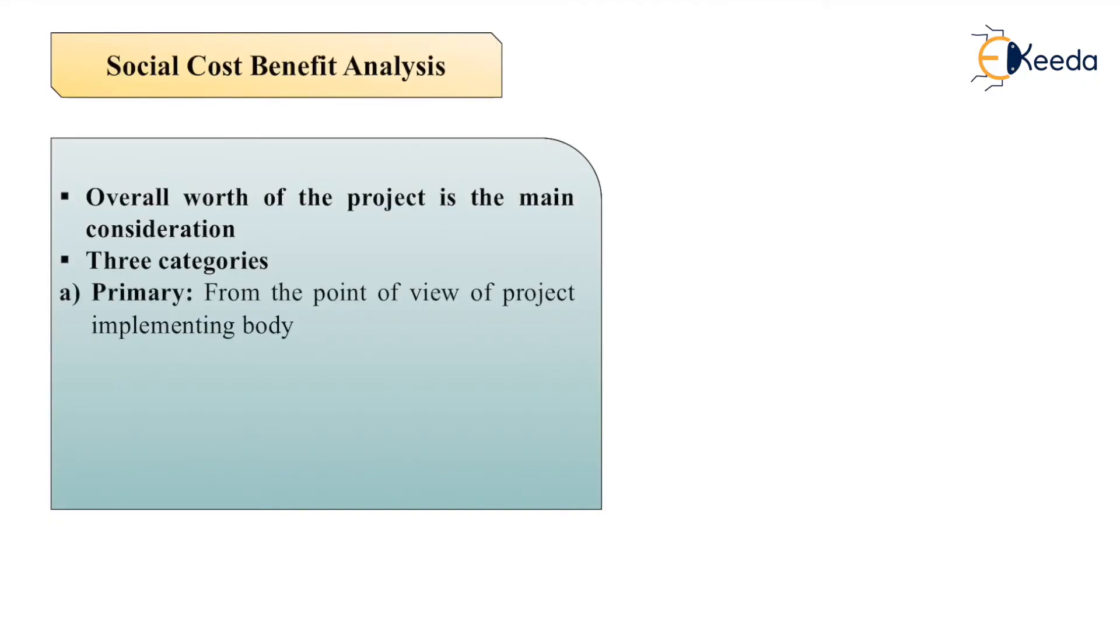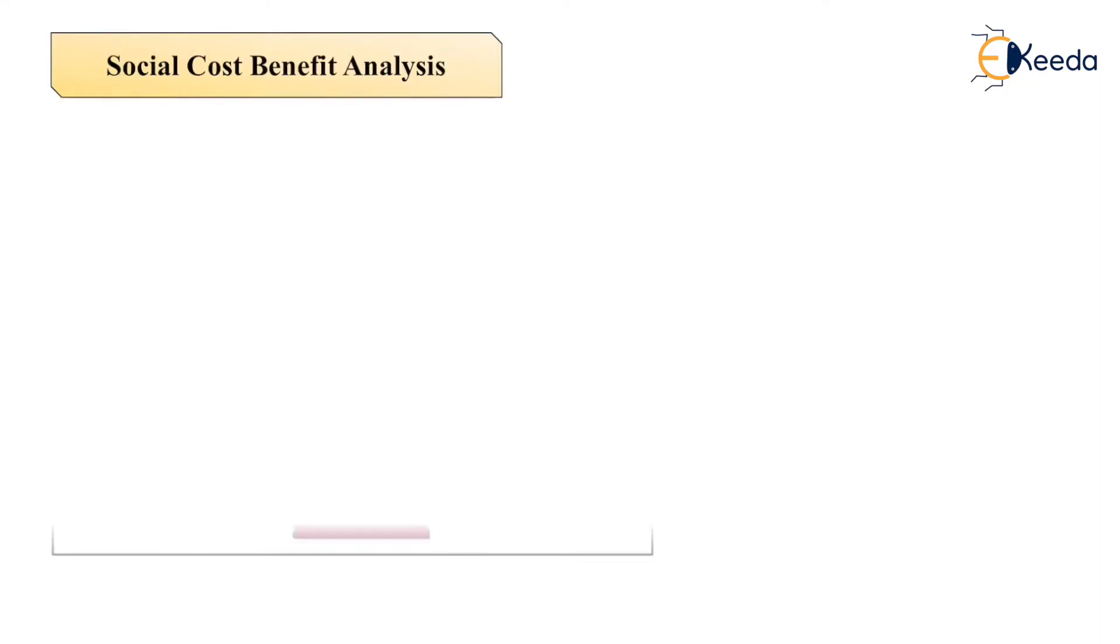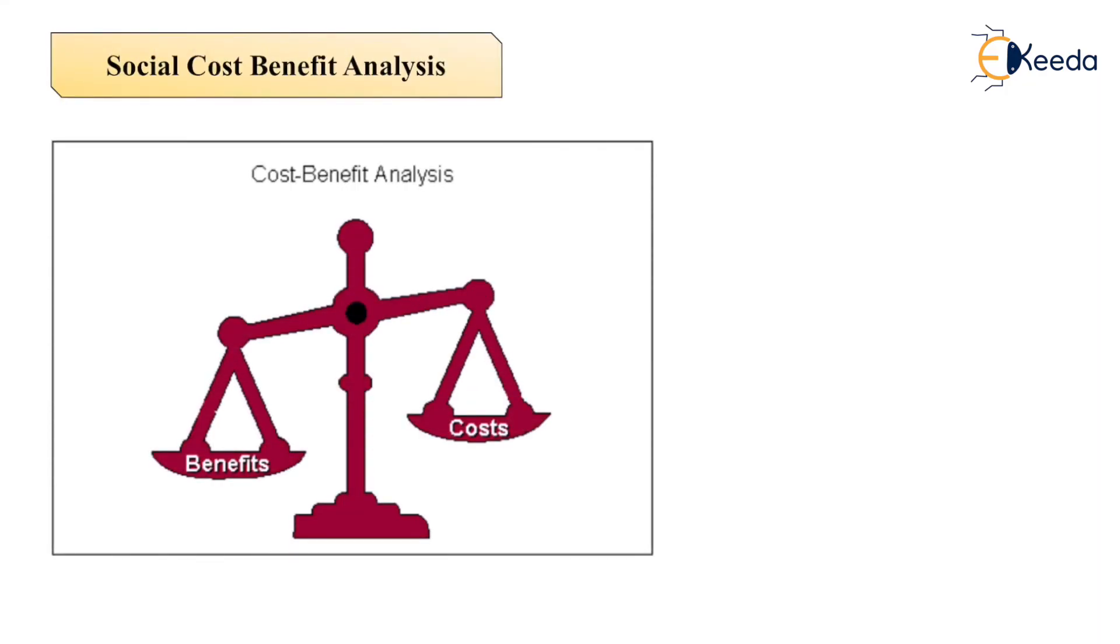Primary means from the point of view of the project implementing body if it is beneficial. Second is apart from the project implementing body, it should be beneficial to others. And last is non-quantifiable spillover. As we can see the benefit and cost, we should go for cost-benefit analysis.